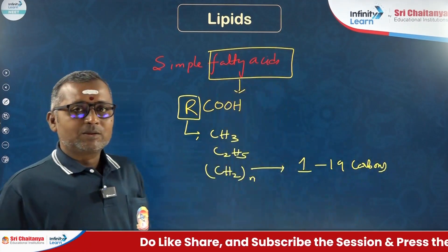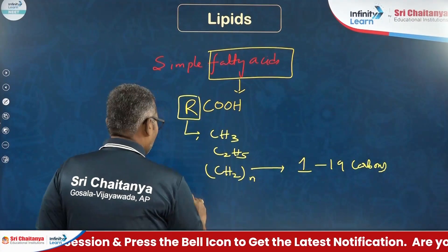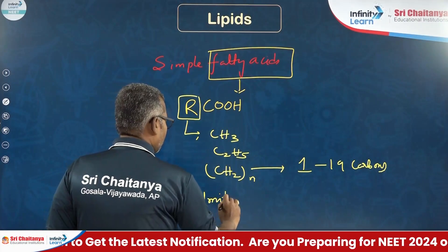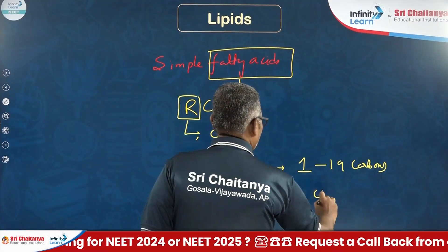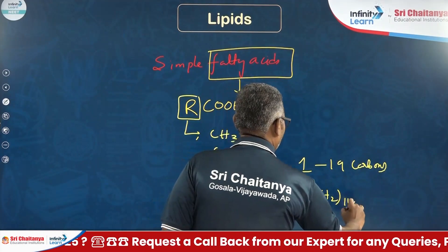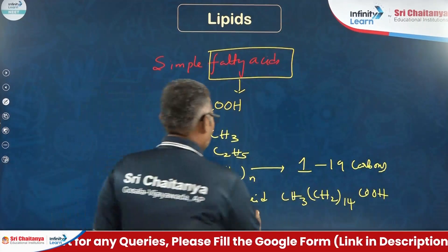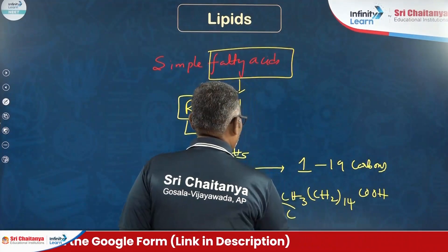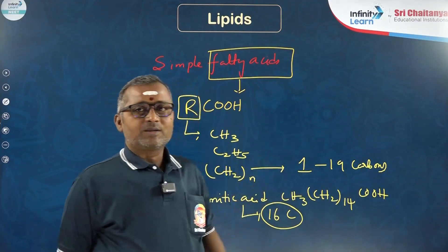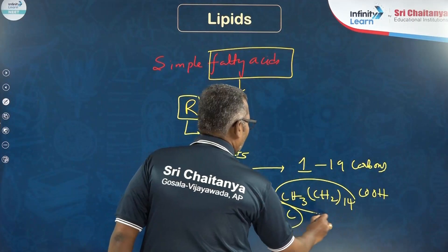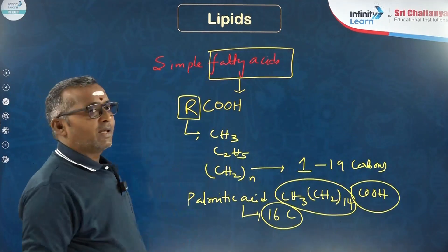We have some examples regarding fatty acids. Palmitic acid is a 16 carbon fatty acid: CH3, CH2 taken 14 times, COOH. This is the R group attached to the carboxylic group, hence it is a fatty acid.